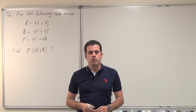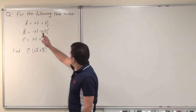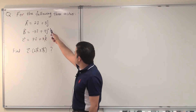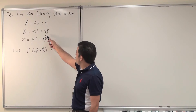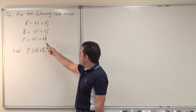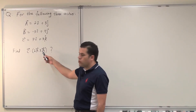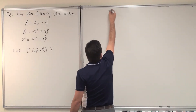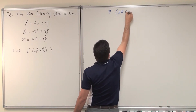As-salamu alaykum. Today we're solving questions from chapter 3. The question reads: for the following three vectors — a equals 2i hat plus 3j hat, b equals minus 3i hat plus 4j hat, and c equals 7i hat plus 3k hat — find c dot (2a cross b). Our final target is to find c dot (2a cross b).